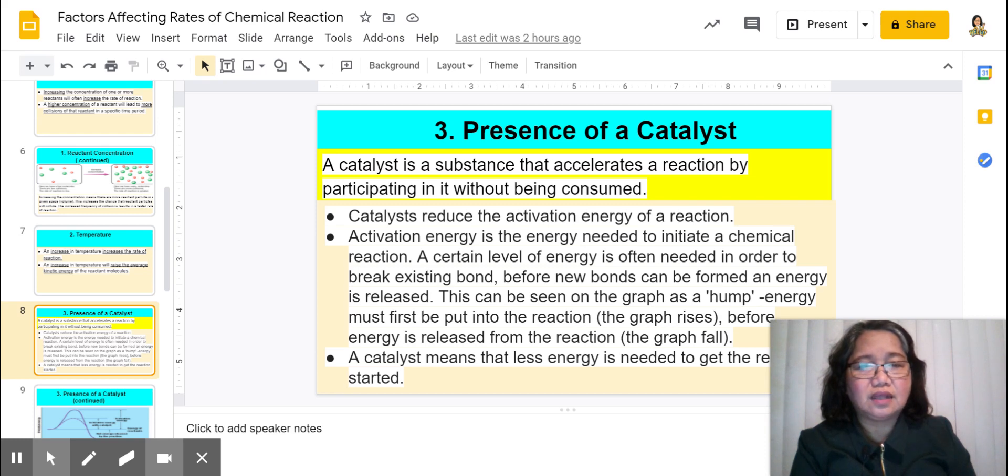But there is also a catalyst which is the negative one, and we call it an inhibitor. An inhibitor slows down the rate of the reaction or stops it. Examples of those are antibiotics.